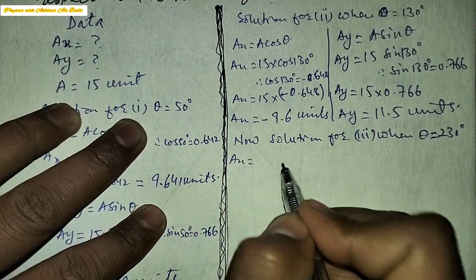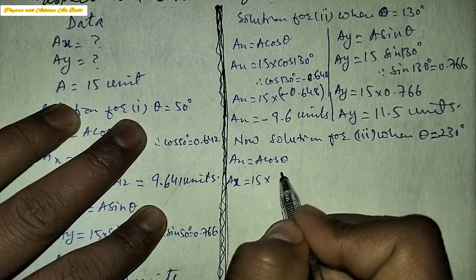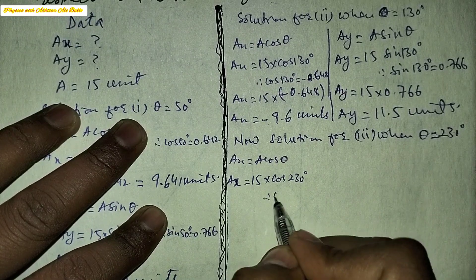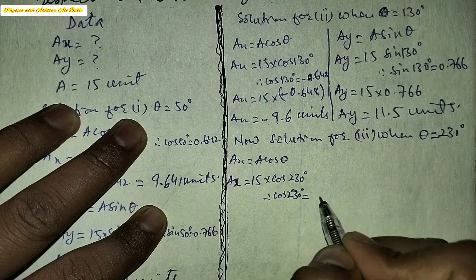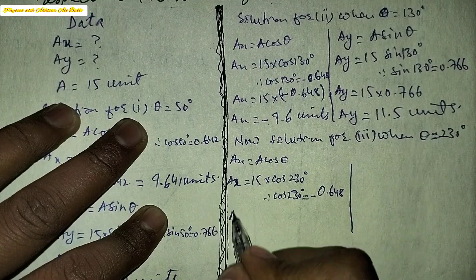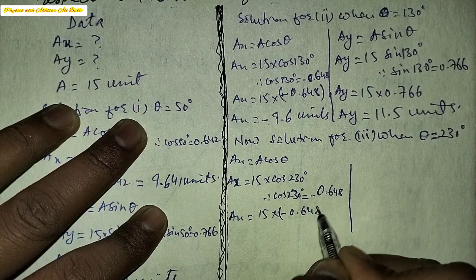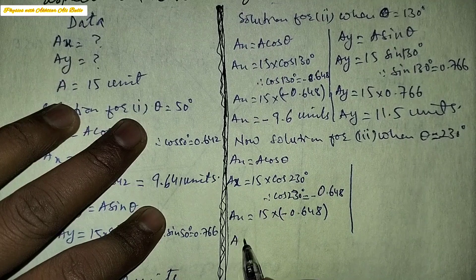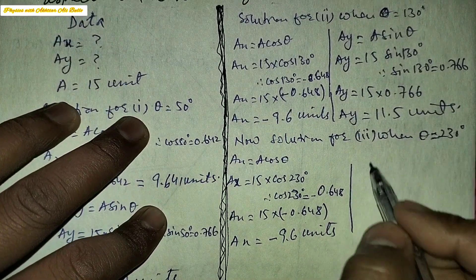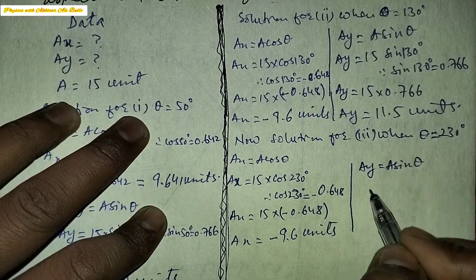Solution for (3): when the angle is 230 degrees. Ax is equal to A cos theta, so Ax is equal to 15 into cos 230°. The value of cos 230° is minus 0.648, so Ax will be equal to 15 into minus 0.648, giving Ax equal to minus 9.6 units.